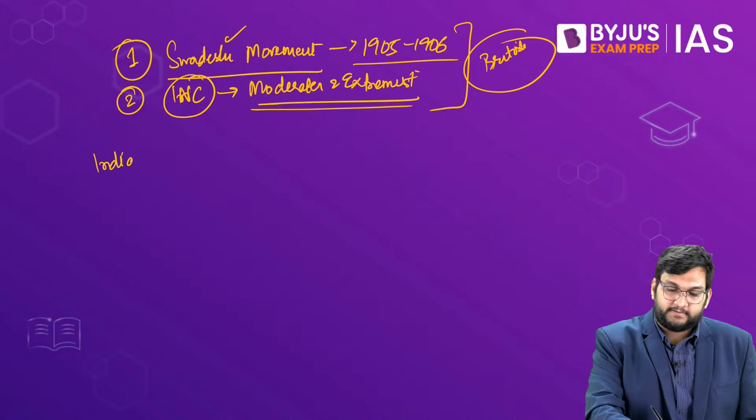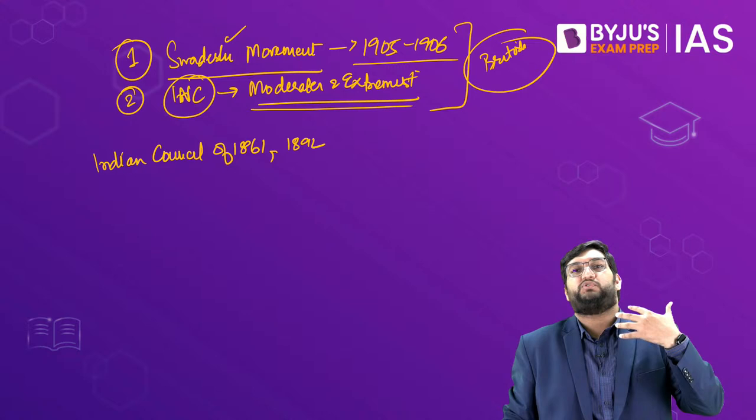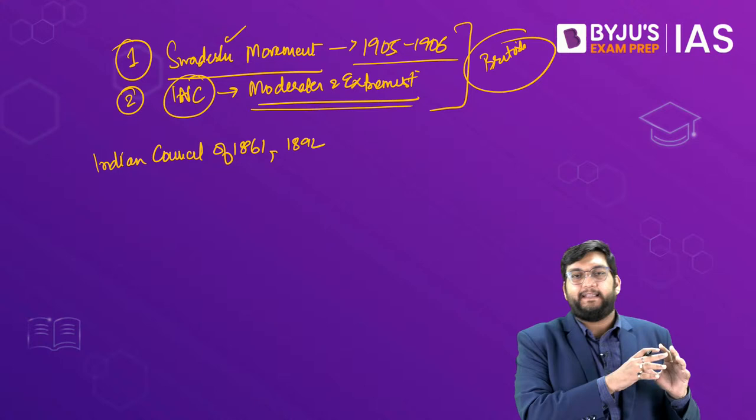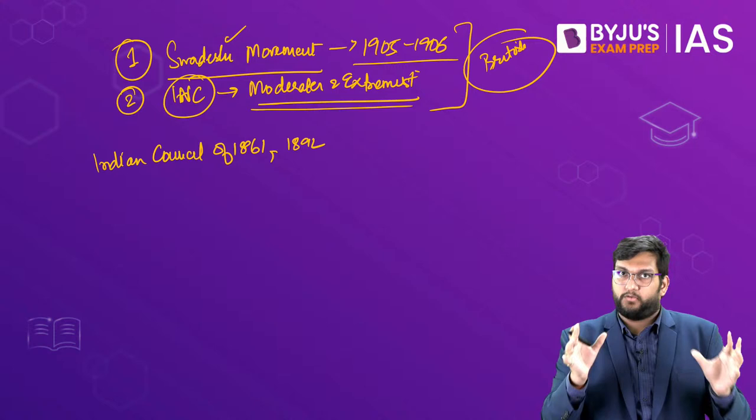On the other hand, when we talk about constitutional history, the Indian Council Acts of 1861 and 1892 were already there, and neither of them had been able to satisfy the moderates and their basic demands. So in order to understand what the 1909 Morley-Minto reforms do, it is important to understand the basic structure of the colonial state itself.